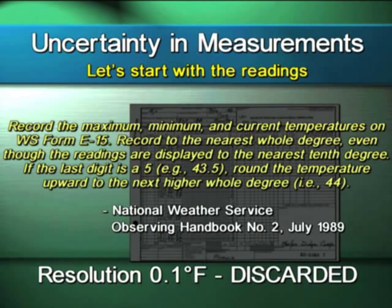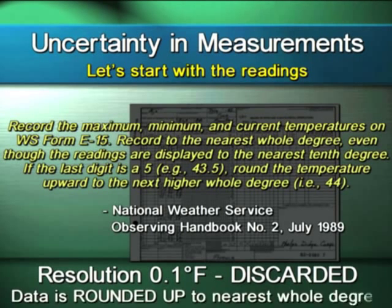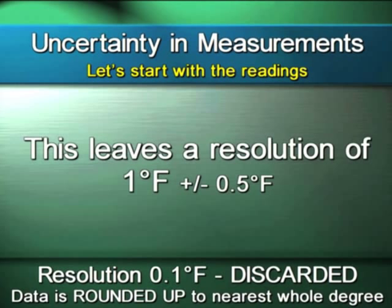There is a standard for all of this. The Weather Bureau and later NOAA specified that they are to round up — take from the nearest tenth of a degree and round it up, so 4.5 becomes 5. That resolution of 0.1 degrees Fahrenheit is discarded. Now, people say the law of large numbers takes care of that, but it still introduces an uncertainty into the entire surface temperature record of plus or minus half a degree Fahrenheit.